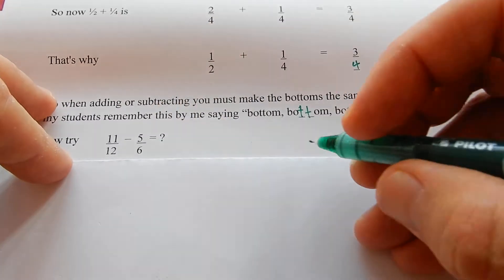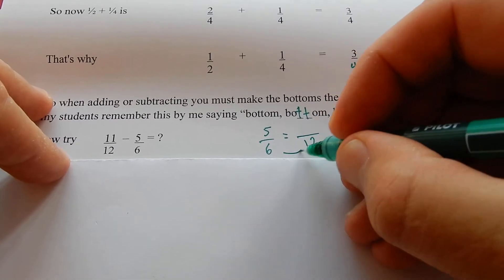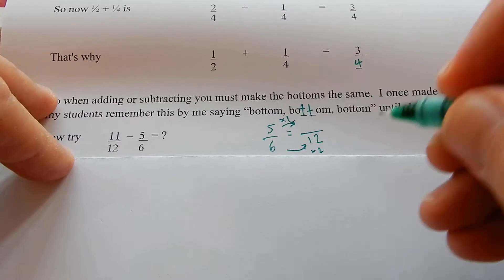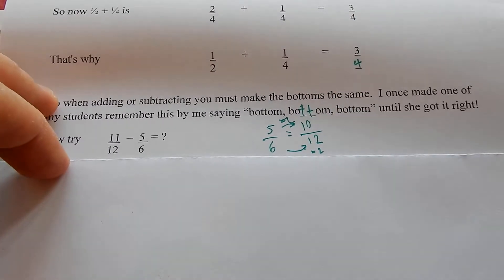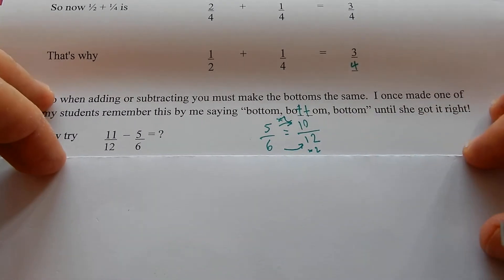So I've got to make the small bottom into a big bottom. Five sixths is how many twelfths? Well, times by two the bottom, so times by two the top. Ten twelfths. Eleven twelfths. Eleven twelfths take away ten twelfths, one twelfth.